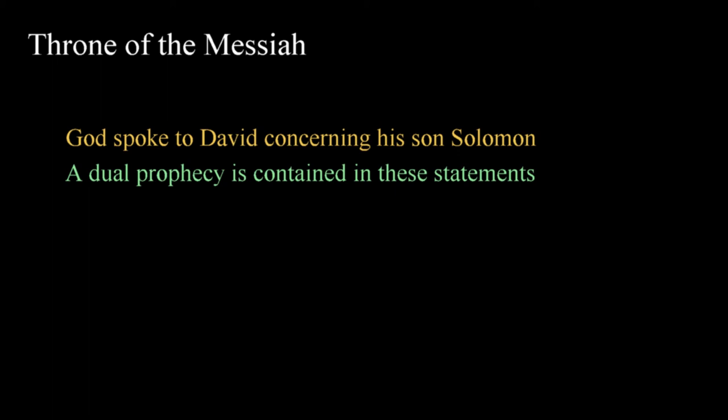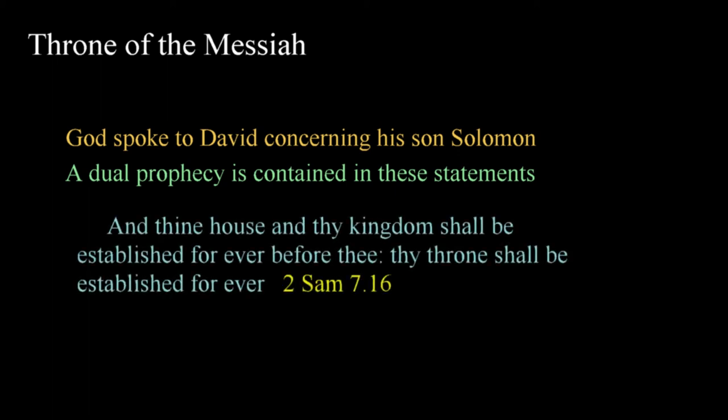Nathan the prophet delivered a message to David telling him of the future of his house. Nathan stated, And thine house and thy kingdom shall be established forever before thee. Thy throne shall be established forever, in 2 Samuel 7:16. God informs David that if his son sins, he will be chastened, but the throne would be established for all time. The nature of the throne and rule to come is spoken of in spiritual terms in the Psalms. Thy throne, O God, is forever and ever. The scepter of thy kingdom is a right scepter. Thou lovest righteousness and hatest wickedness. Therefore, God, thy God, hath anointed thee with the oil of gladness above thy fellows, in Psalm 45:6-7.